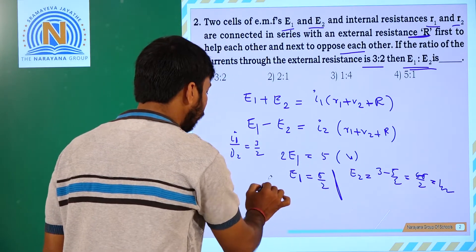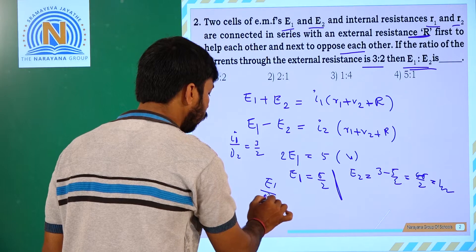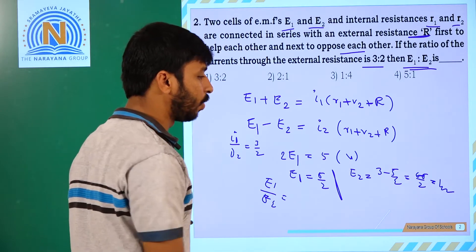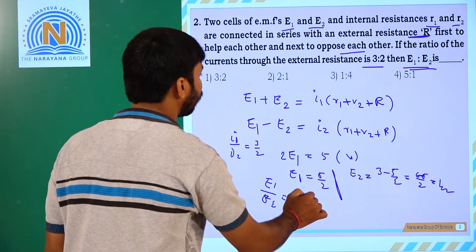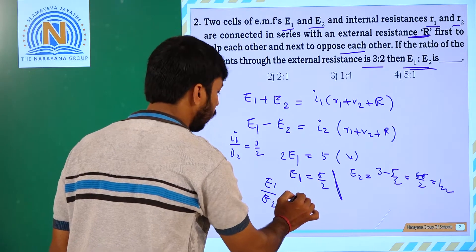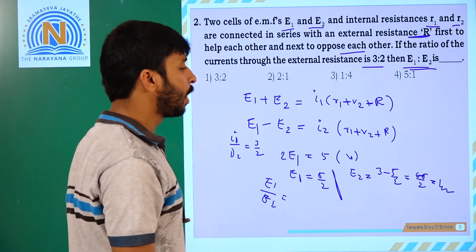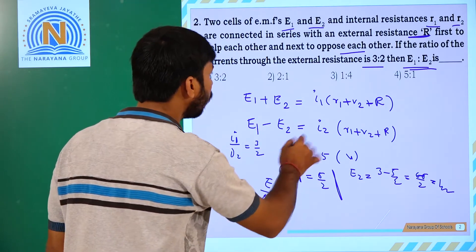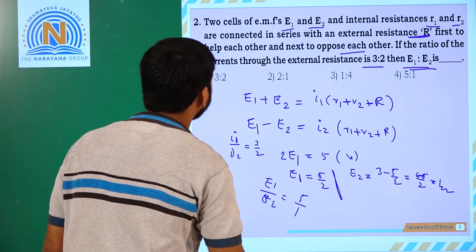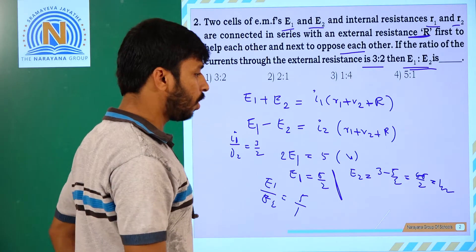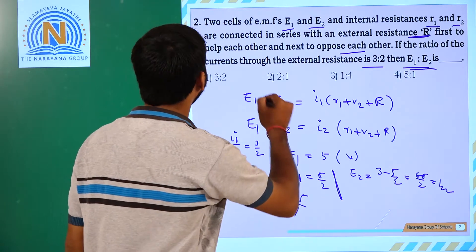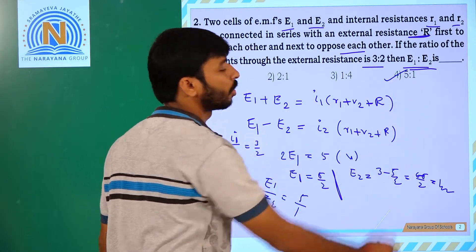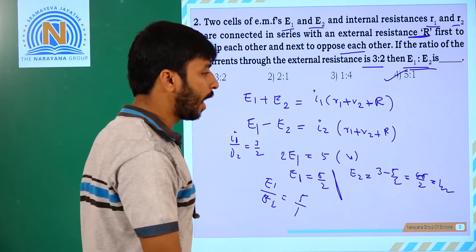So E1 by E2 is equal to 5 by 1. This is the value. The fourth option is correct option.